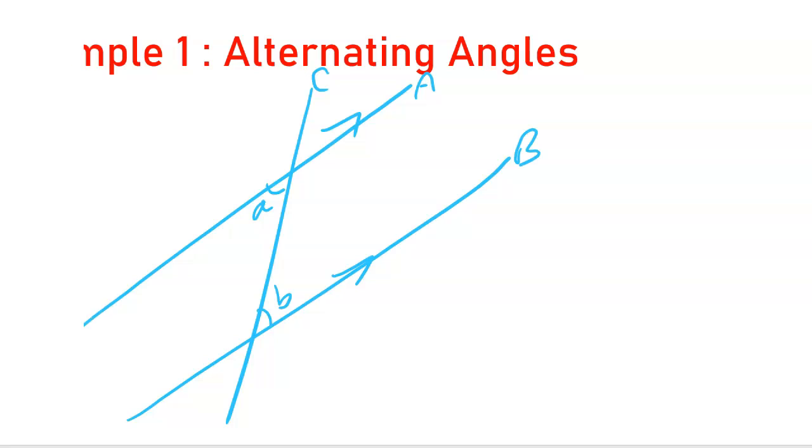Let us say we have two parallel lines A and B and we also have a transversal line C intersecting those two parallel lines. Alternating angles are such that when you have an angle here, say A, and you have another angle B here, the angles A and B are called alternating angles.